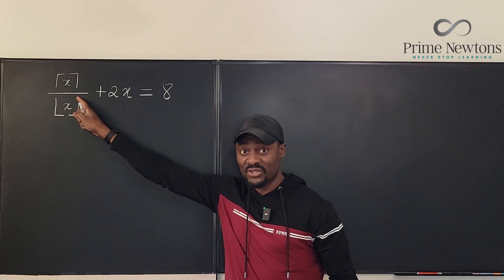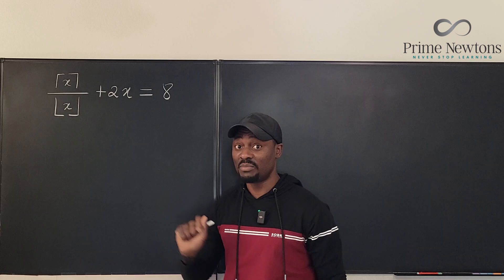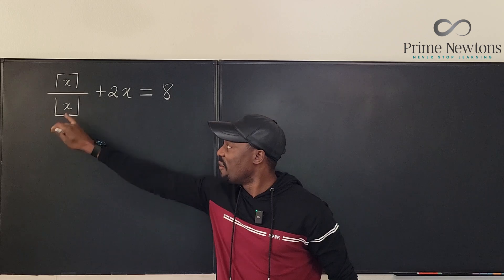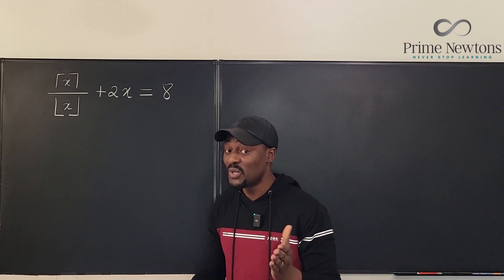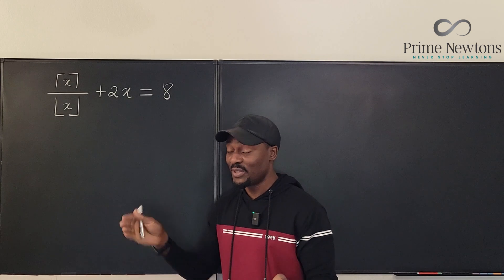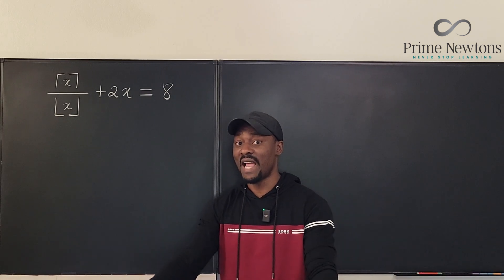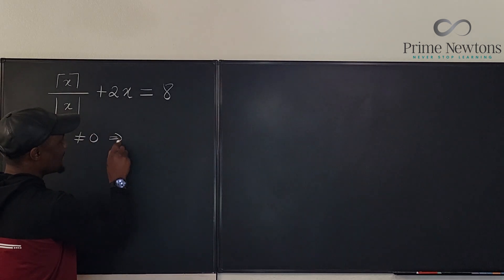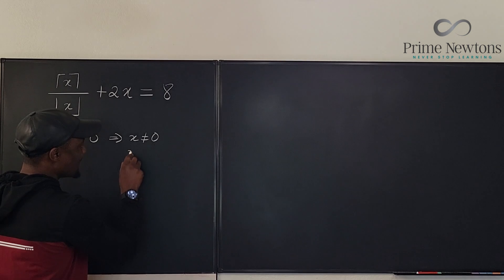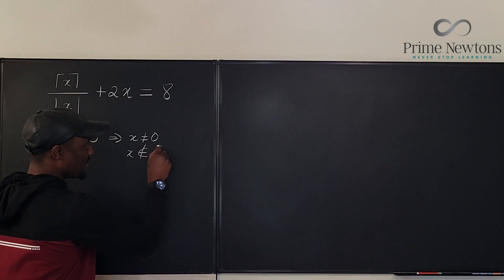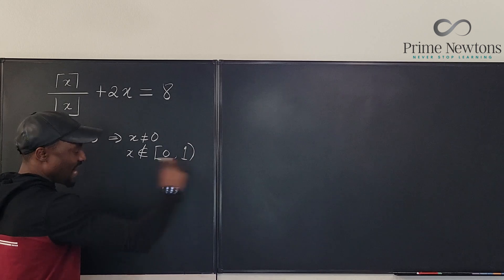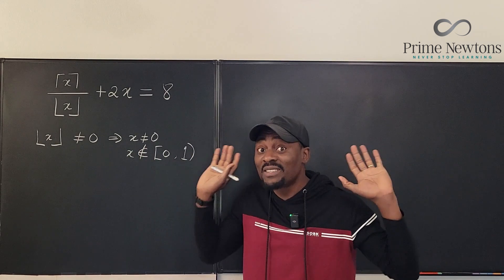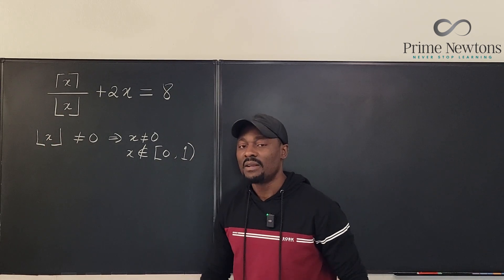Number one: because this is a fraction, the denominator cannot be zero, so x cannot be zero and the floor of x cannot be zero. So clearly we know that the number we're looking for is not zero, and it is not a number between zero and one — because if x is a fraction in that range, the floor of x would be zero. So x is not between zero and one. The floor of x is not equal to zero, which implies x is not zero and x is not on the interval from zero to one. You can't find x there — that's not a possible location for x. The only reason is because the floor of x is in the denominator.